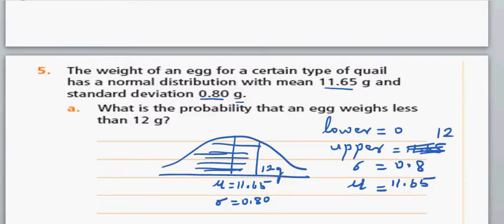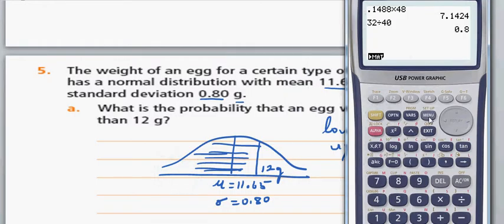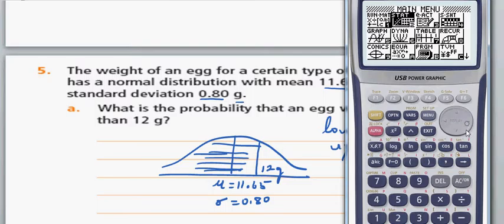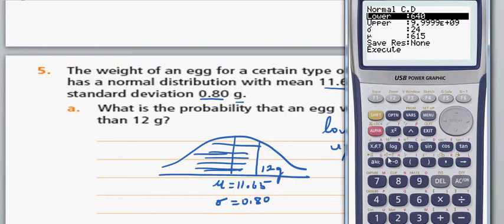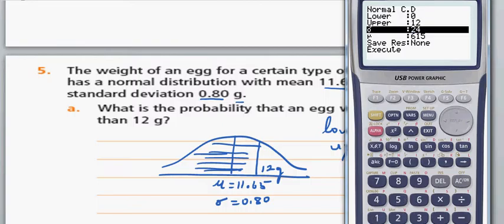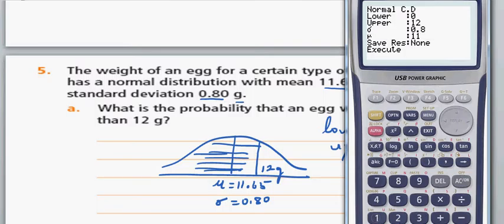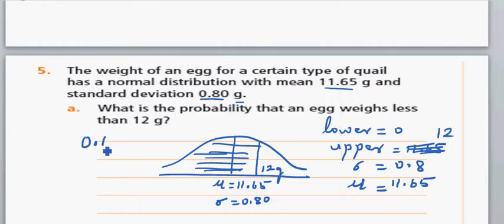So let us use the calculator. Go to menu, stats, distribution, normal, ncd. Enter lower = 0 and upper = 12, standard deviation = 0.8, and mu = 11.65. The answer is 0.6691, so the probability is 0.6691.